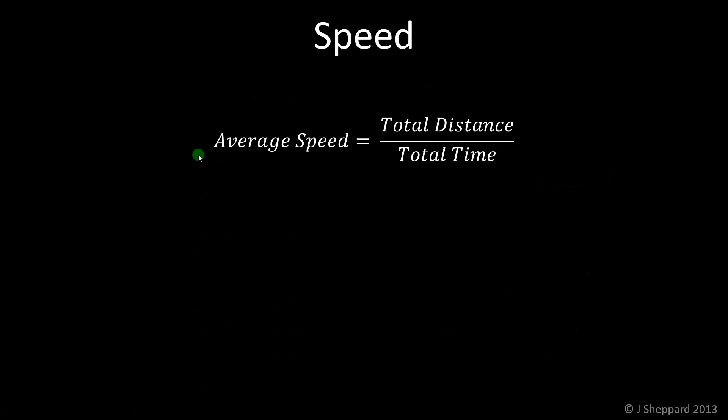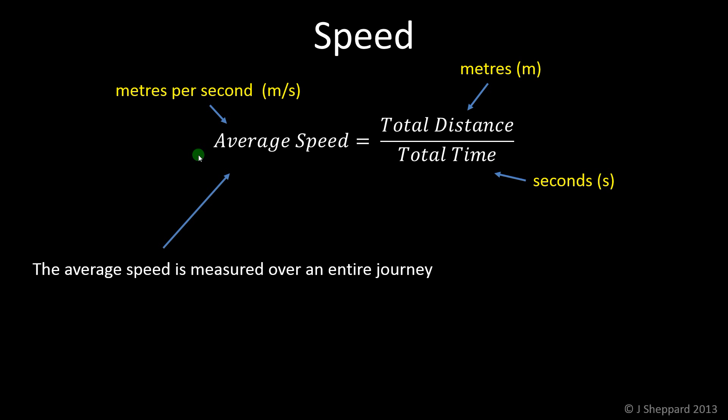So contrasting with instantaneous speed is average speed. Again, the units are the same: meters, seconds, and meters per second. But the average speed is measured over an entire journey.